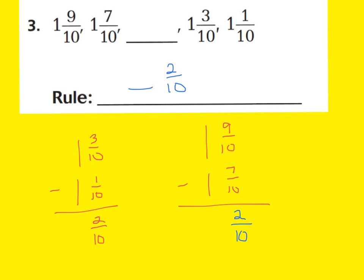So my missing number in my pattern would be 1 and 5 tenths, because I'm going to take away 2 tenths from 7 tenths, giving me 1 and 5 tenths. You can say you're decreasing by 2 tenths, or if you simplified, you can also call it decreasing by 1 fifth, because 2 tenths can be simplified to 1 fifth. Also don't forget that 1 and 5 tenths can also be considered 1 whole and 1 half, because 5 tenths is equivalent to 1 half.